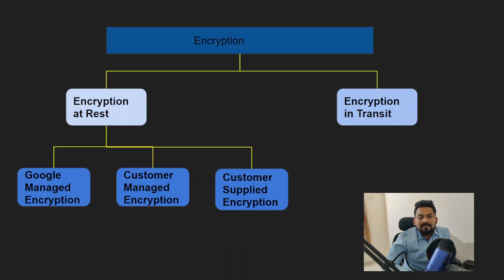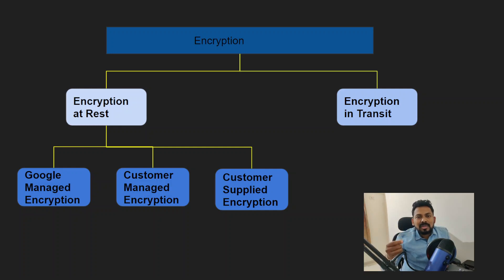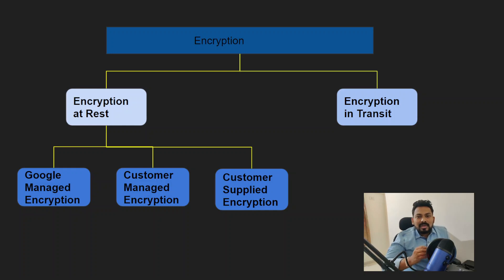There are three different methods of encryption at rest in Google Cloud. First is default Google-managed encryption. Whenever you are storing data on Google Cloud, your data is by default encrypted with Google-managed encryption keys. You don't need to take any additional action for encrypting your data with Google-managed encryption keys.